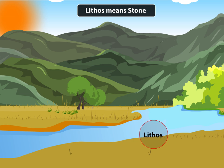In Greek language, lithos means stone. Therefore, lithosphere is the solid portion of the Earth. There are two main divisions of lithosphere. The large land masses are known as the continents and the huge water bodies are called the ocean basins.